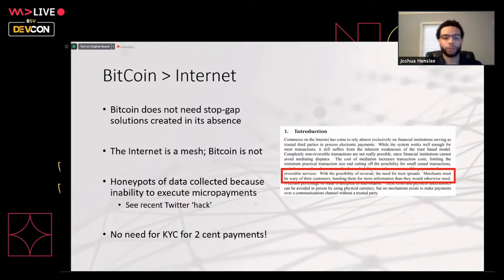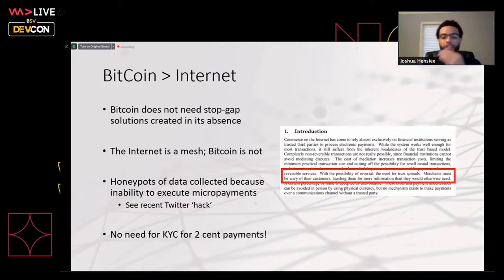The white paper quote highlights that with the possibility of reversal, the need for trust spreads. Merchants must be wary of customers, hassling them for more info than they would otherwise need. When we lower that risk, we also reduce costs: if I don't collect your email address and store it in a database, my business has less cost because I don't have all that customer info stored. The cost of securing goes away. The cost of storage goes away. My profit margin rises as a result. We shouldn't bring that stuff into our Bitcoin business — it's handled by the network. Micropayments completely obsolete this.